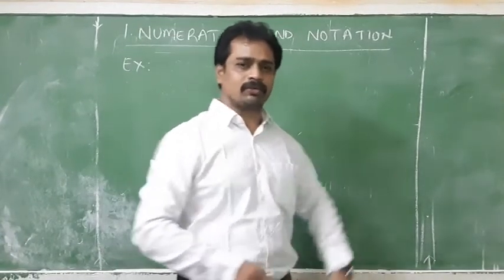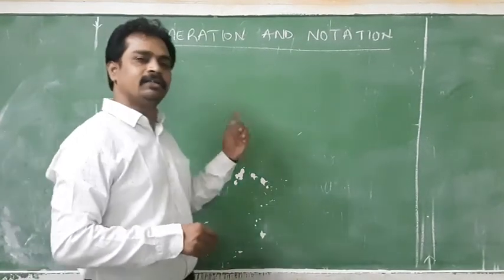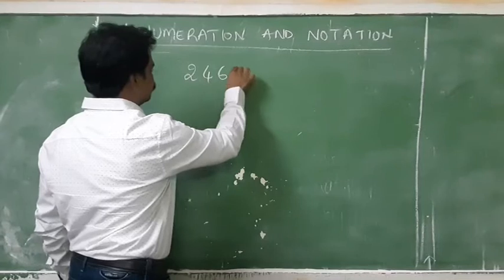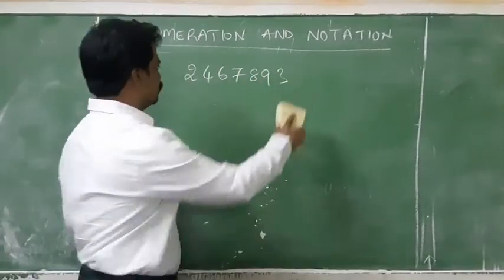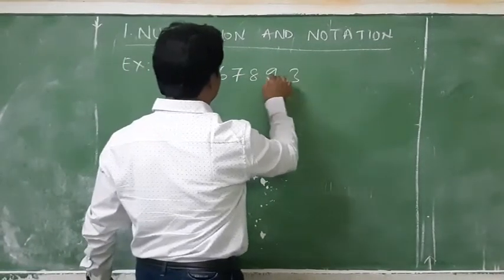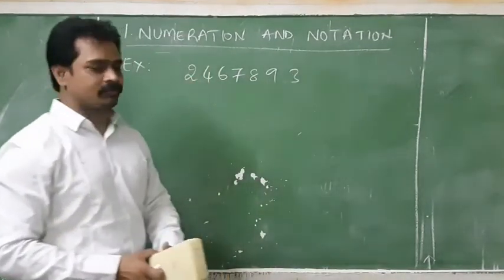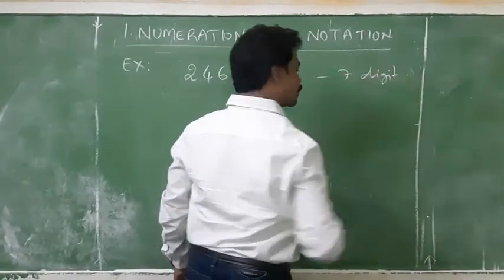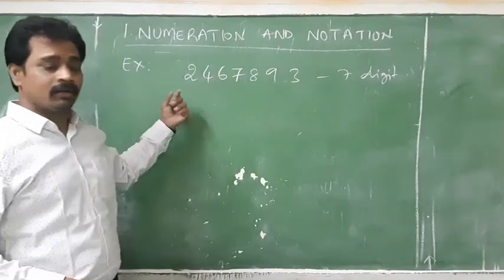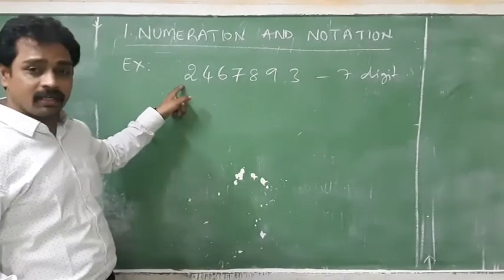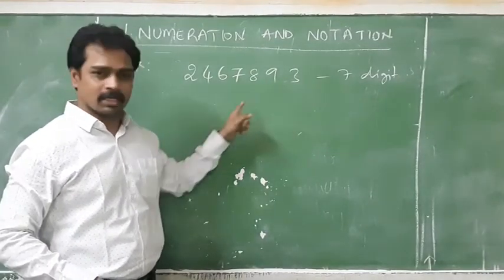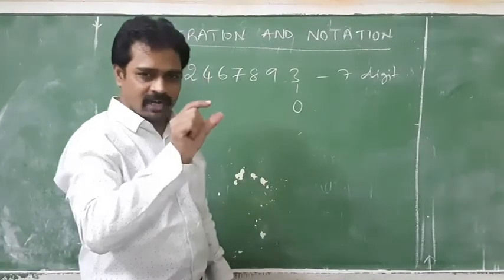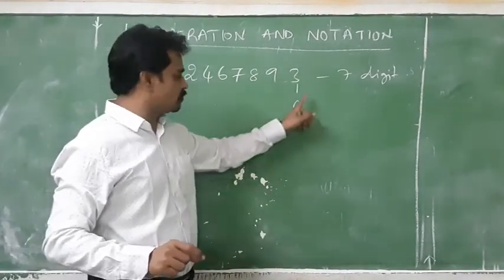Indian system. Tens, hundred, thousand, ten thousand, lakhs, crores — going into the Indian system. I will write one number. Seven digit number — one, two, three, four, five, six, seven digit number. How do we read this? We need to know the place value. First, the place value: O means ones place. Ones is the first position. After ones we get tens.